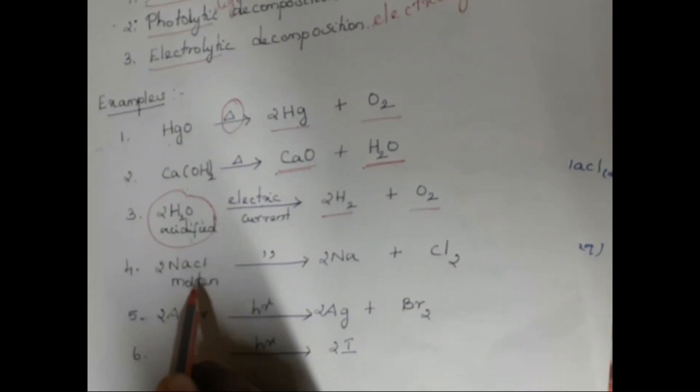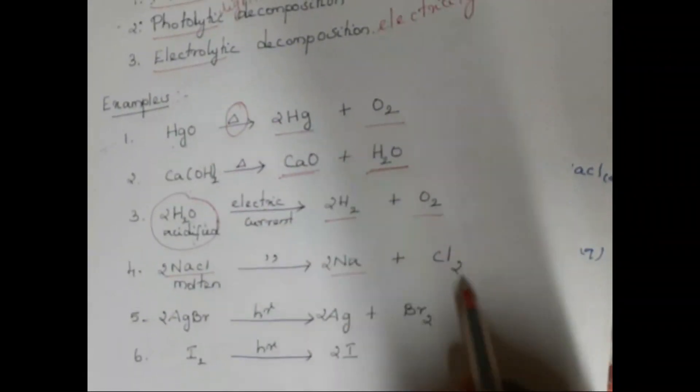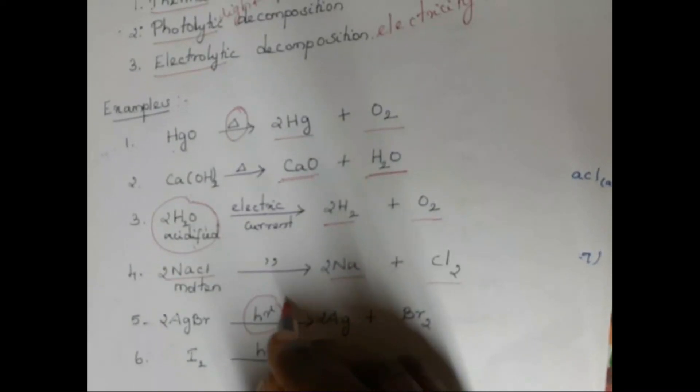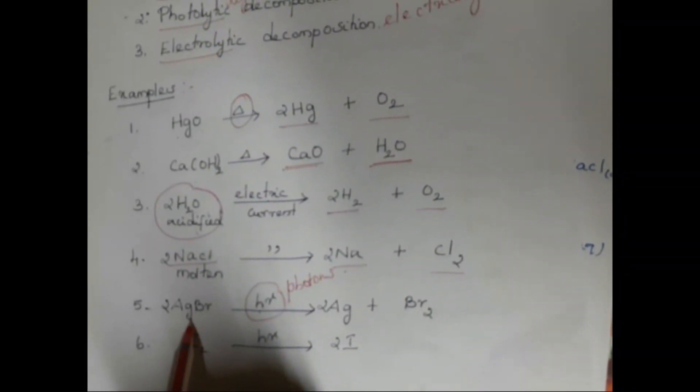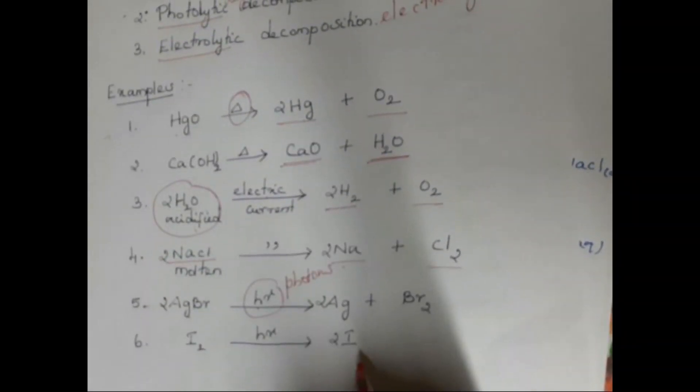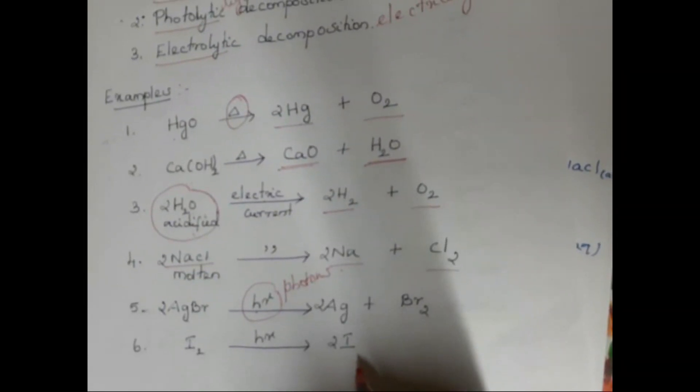Fourth example: molten sodium chloride on passing electric current undergoes electrolytic decomposition, breaking down into sodium and chlorine. Fifth, silver bromide on supplying light energy — photons — breaks down into silver and bromine. Similarly, iodine on passing light breaks down into iodine atoms. I hope you have understood the concept clearly. Thank you, children.